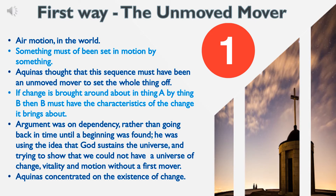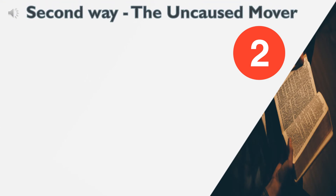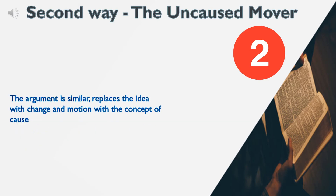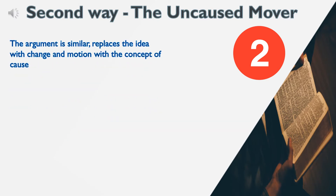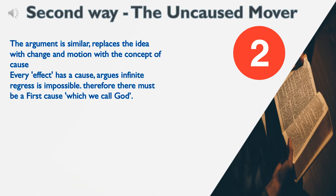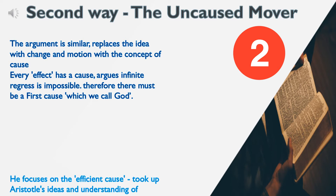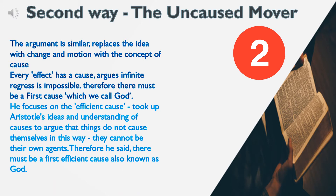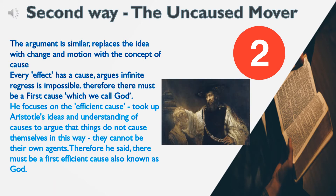Aquinas concentrated on the existence of change. Second Way: the Uncaused Cause. The argument is similar but replaces the idea of change and motion with the concept of cause. Every effect has a cause, and Aquinas argues infinite regress is impossible. Therefore there must be a first cause, which we call God. He focuses on the efficient cause, taking up Aristotle's ideas to argue that things do not cause themselves — they cannot be their own agents. Therefore there must be a first efficient cause, also known as God.